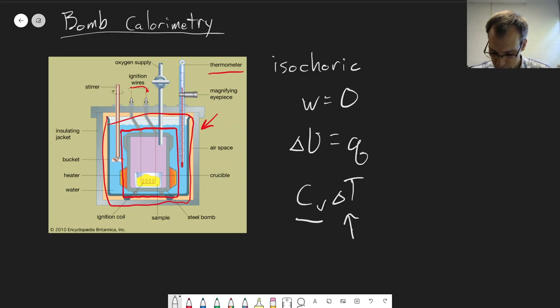To be able to do this, we need to know what the heat capacity for our system is, CV. To do this, we have to calibrate the calorimeter with a reaction of known heat release. We calibrate with something like benzoic acid combustion, which is a common one used for this.